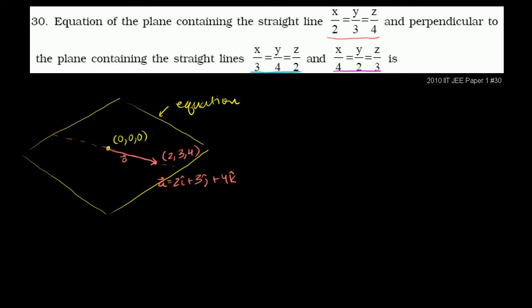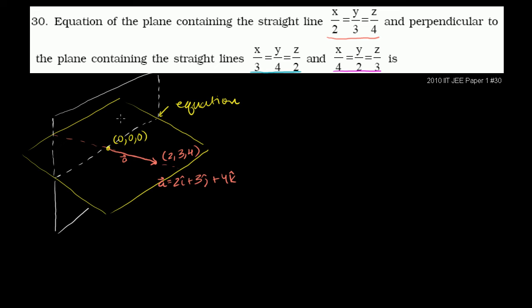Let me draw this other plane in white. This other plane also contains (0,0,0) — actually, both of these other lines contain the origin. This white plane comes vertically above and below. We see that the plane containing these two lines is perpendicular to the yellow plane. We need to find the equation of the yellow plane.